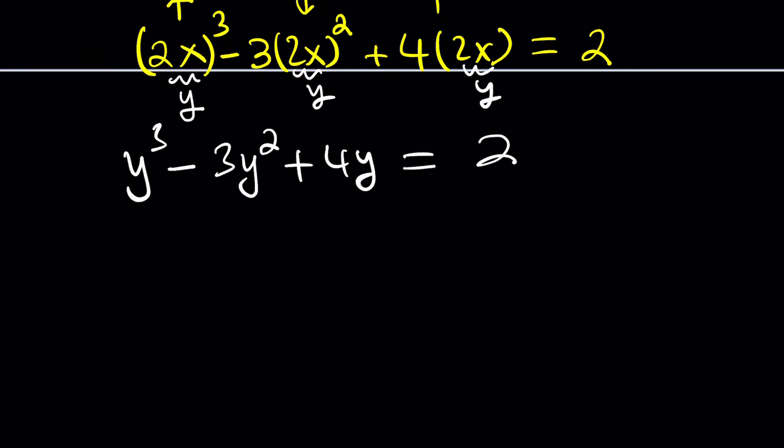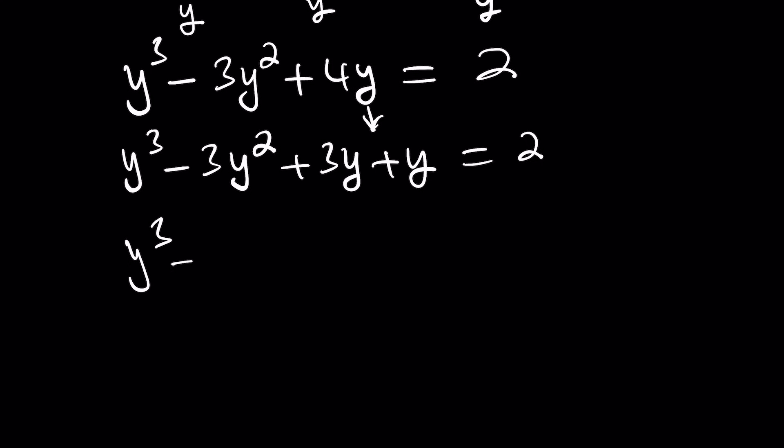You could also do this, though. You can kind of write it in a different way, because this kind of looks like a perfect cube, doesn't it? Well, pretty close. Look, you can write this as y³ - 3y² + 3y + y. By the way, 4y can be broken down into this. And then, you can go ahead and subtract 1 from both sides, but put the -1 here and subtract 1 from the 2. Did that make sense at all? I hope so.